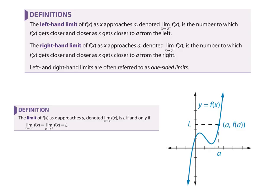Now let's talk about left-hand limits, right-hand limits, and the definition of limits. The overall limit says both sides have to approach the same thing. They tell you what x is doing — x is going towards some value a. The notation is: 'the limit as x approaches a of some function f.' They'll give you the function.